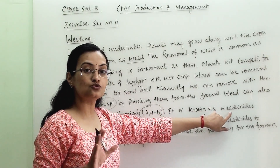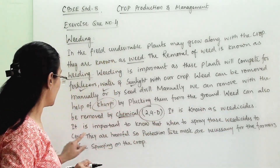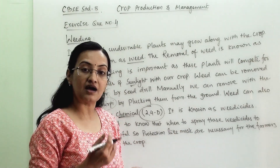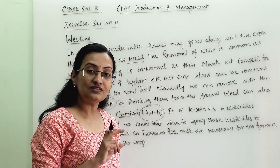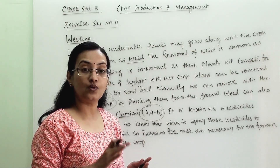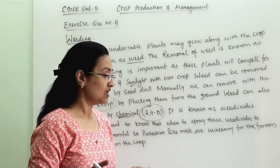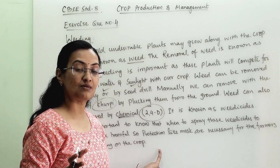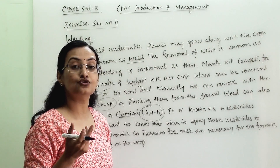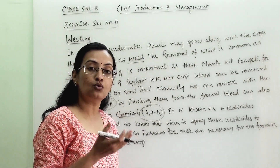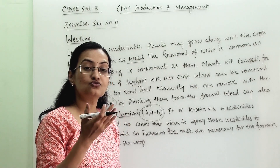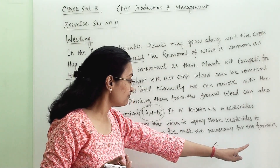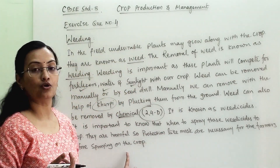The chemicals used to remove weeds are known as weedicides. It is important to know when to spray the weedicide — on the labeling information it will be noted when to spray it on the crop. These are harmful chemicals, so when farmers are spraying them, it is important that they use a mask or put some cloth over their nose so they do not inhale it. Protection like masks is necessary for farmers before spraying on the crop.